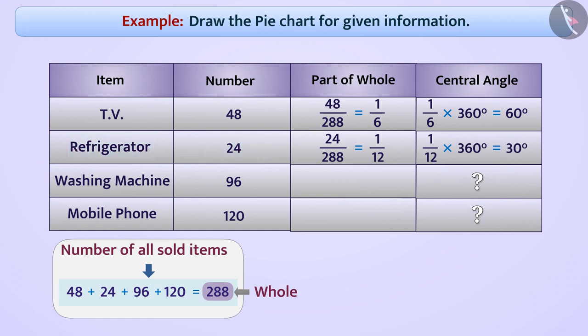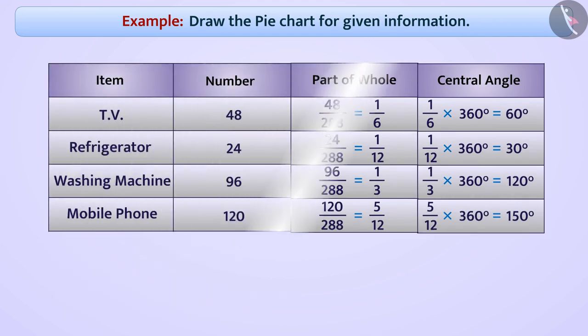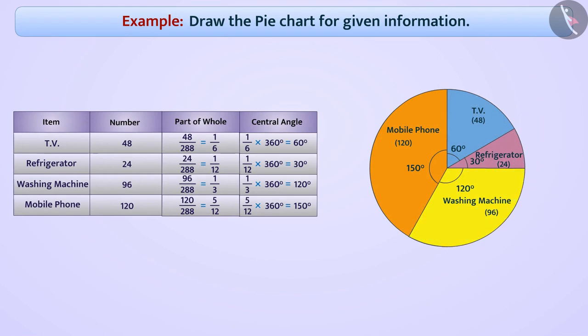Similarly, we find other central angles and draw a table. Now we will show these data in the pie chart. Thus, we have drawn a pie chart to show the information.